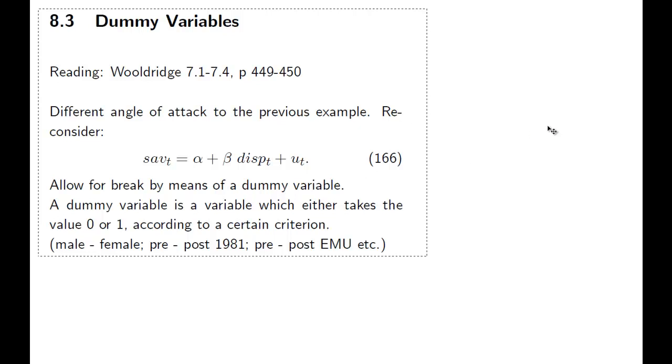In this section we're going to tackle the same problem as before in the structural change test, but we'll do it in a slightly different angle here. We are starting out with the same model and we use our same example. What we now want to do is allow for a break. We need to adjust the model to allow for a break, and to adjust it we need what's called a dummy variable.